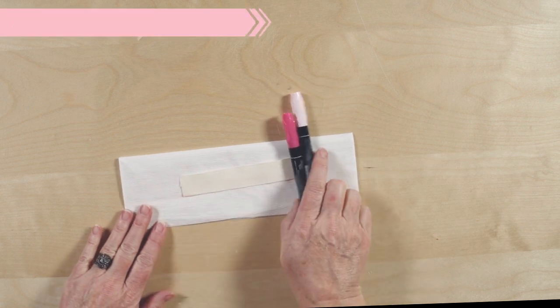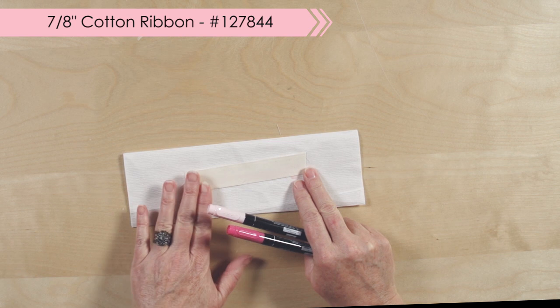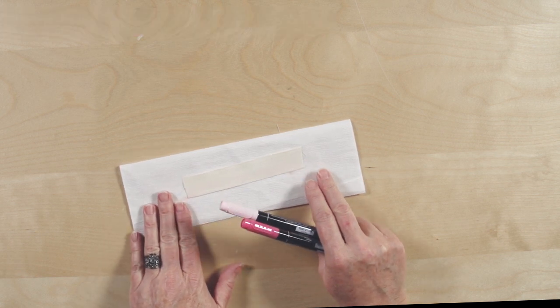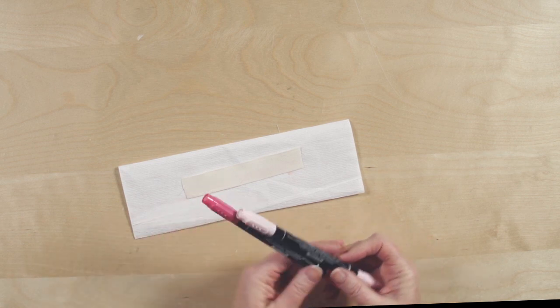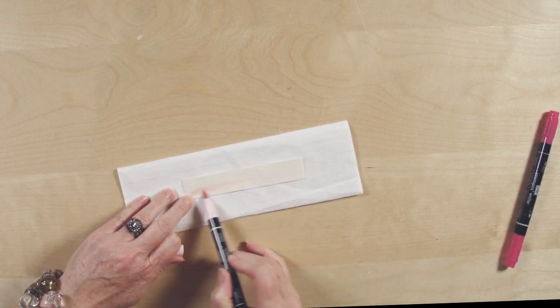Now the faux dip-dyeing technique is great to use on our seven-eighths inch cotton ribbon because it has a little bit of a finish that repels water. What you'll need is just a couple of markers. Start with the lighter color first, and you'll just color the ribbon.